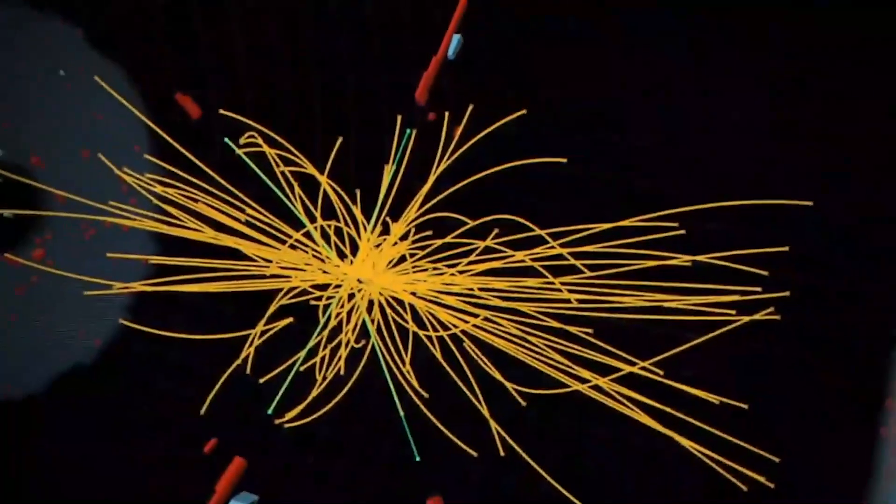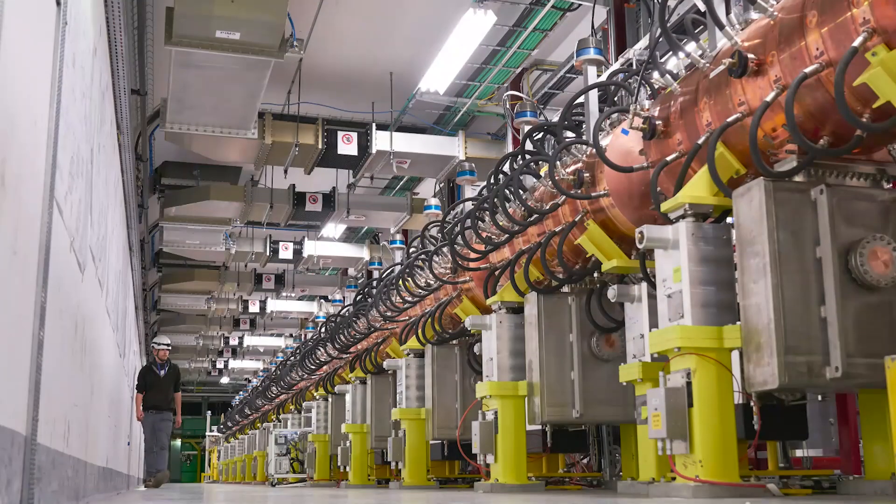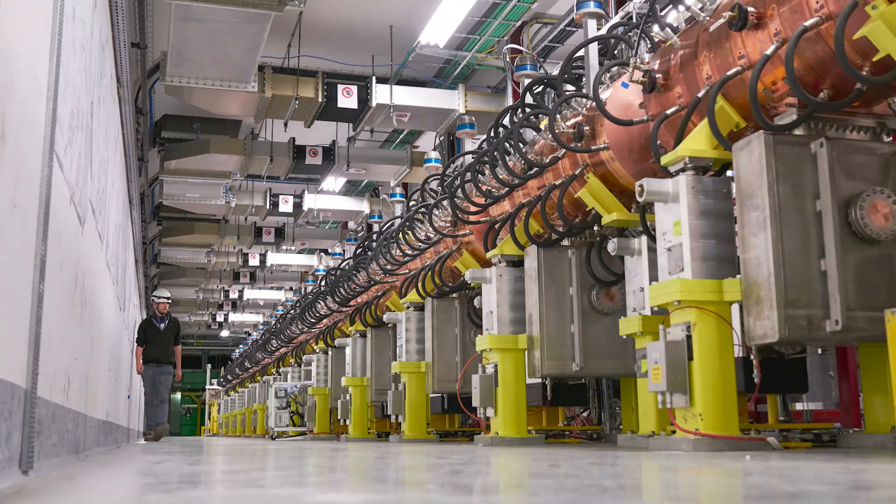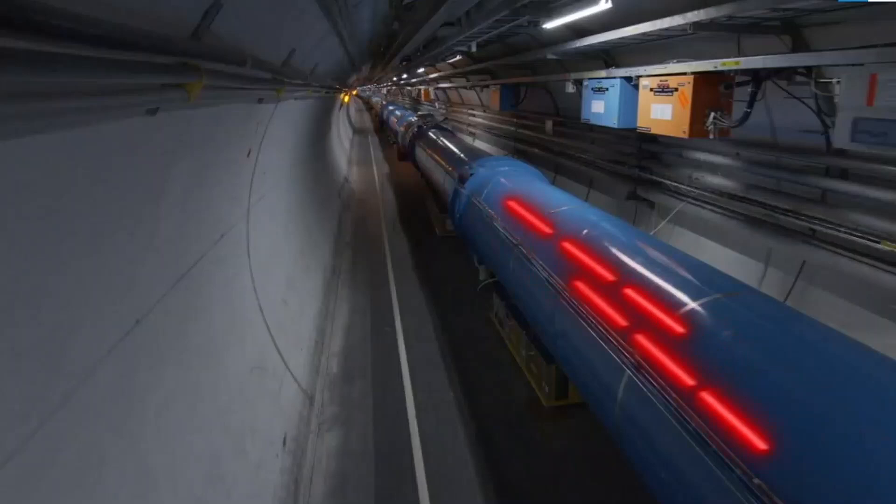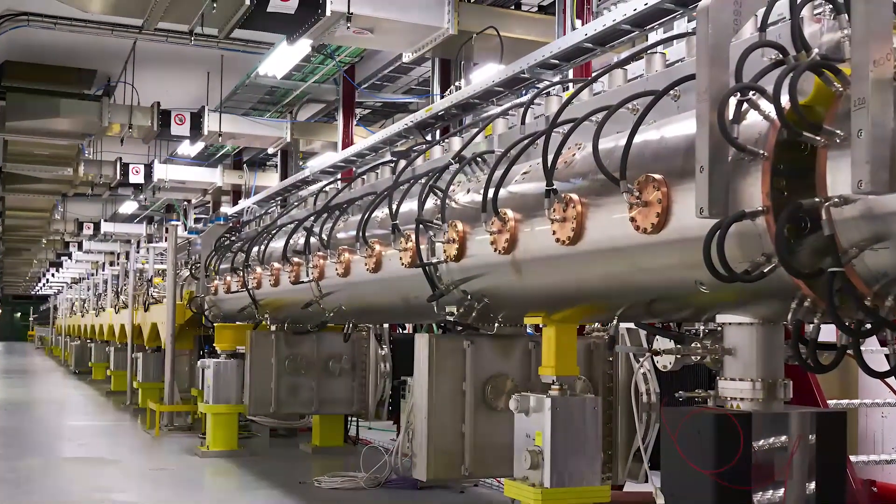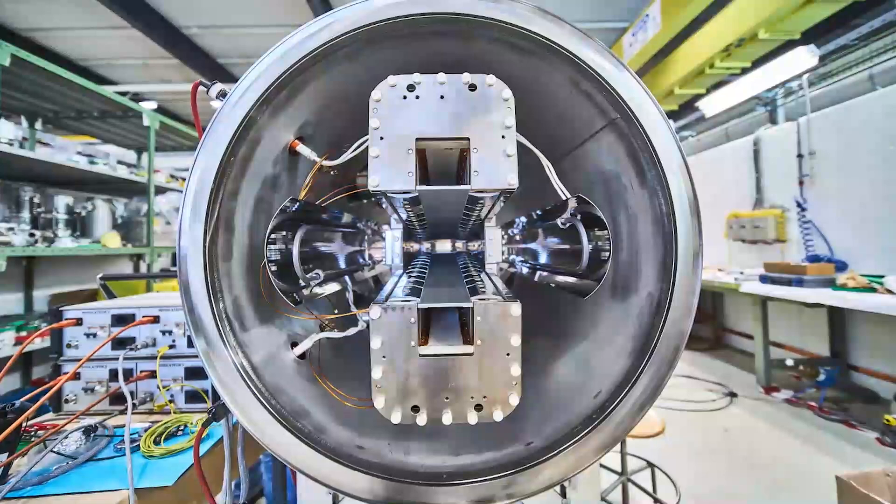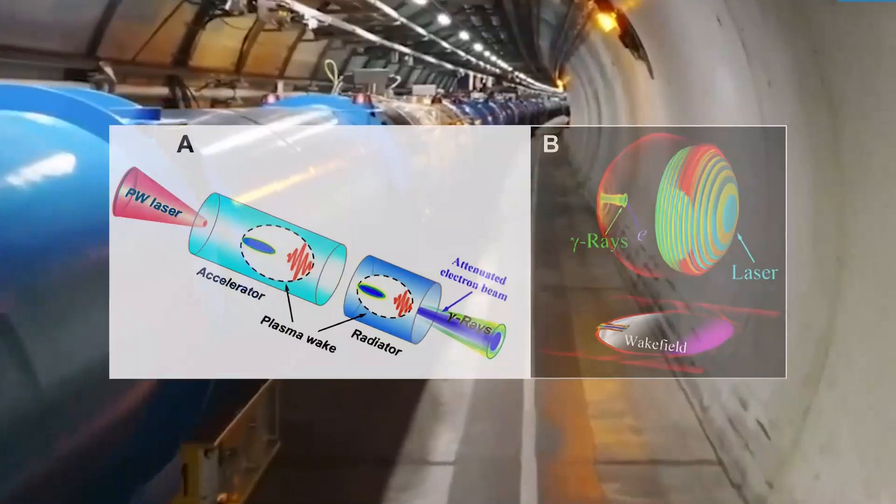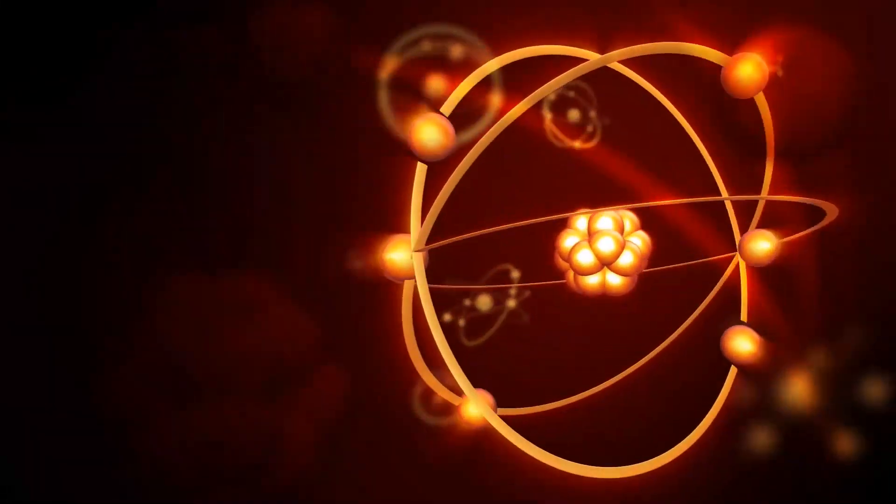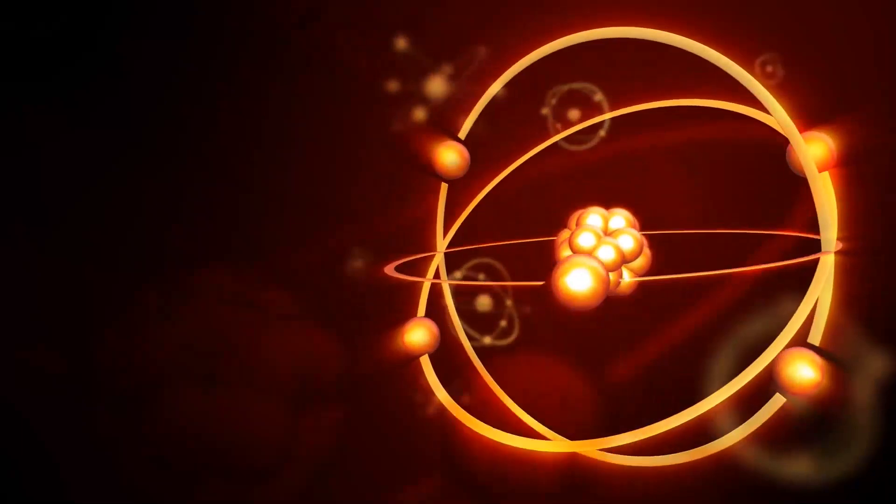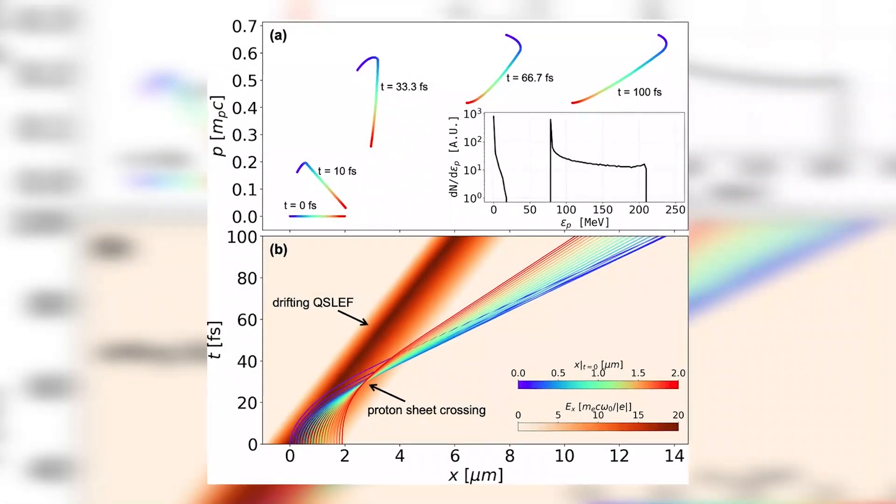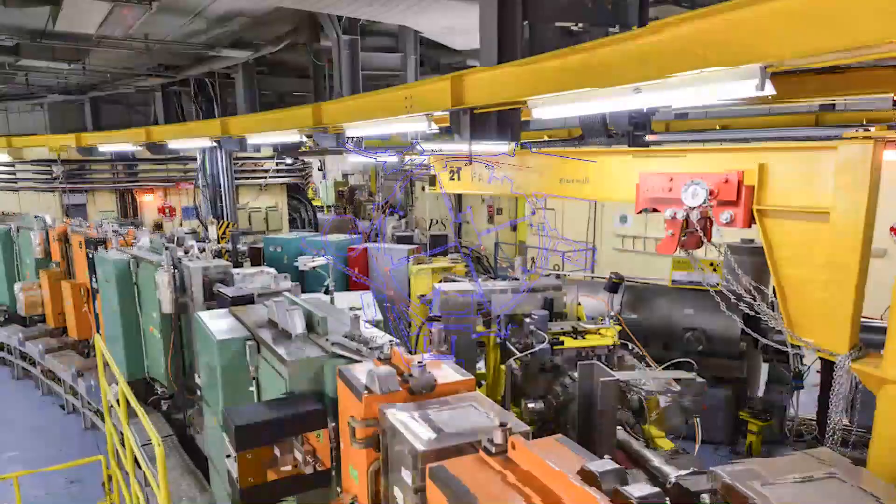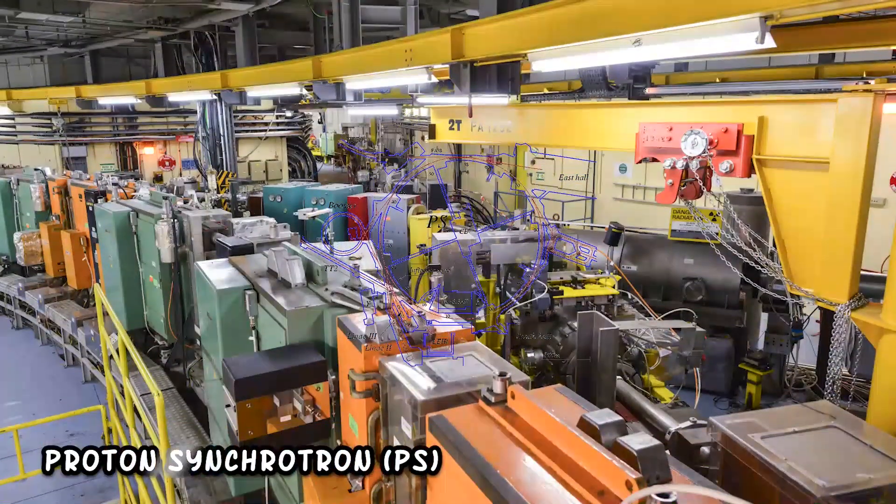Before being injected into the main accelerator, the particles are prepared by a series of systems that successively increase their energy. The first system is the linear particle accelerator, LINAC-4, generating 160 million electron volts of negative hydrogen ions, which feeds the proton synchrotron booster (PSB). There, both electrons are stripped from the hydrogen ions, leaving only the nucleus containing one proton. Protons are then accelerated to 2 gigaelectron volts and injected into the proton synchrotron (PS).